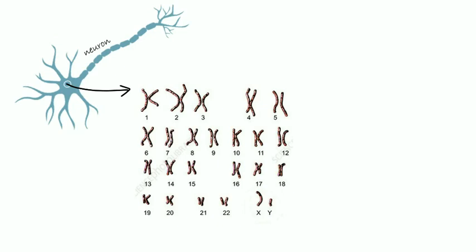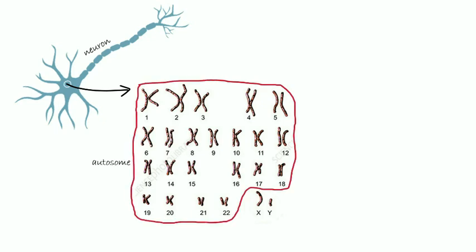Chromosomes are differentiated into two types. The first type is body chromosomes or autosomes. We can see from this picture, autosomes are chromosome number 1 to 22. Autosomes determine the physical characteristics such as hair color, eye shape, and skin color.